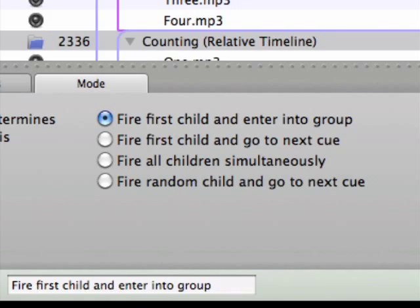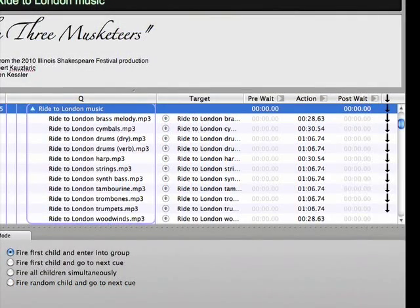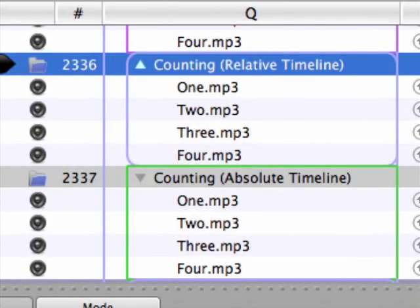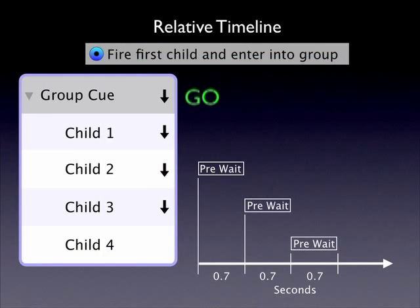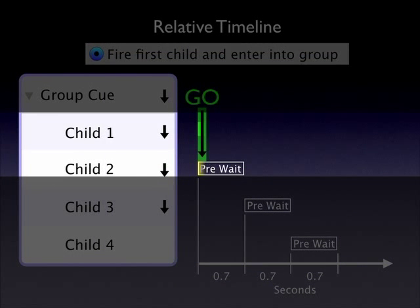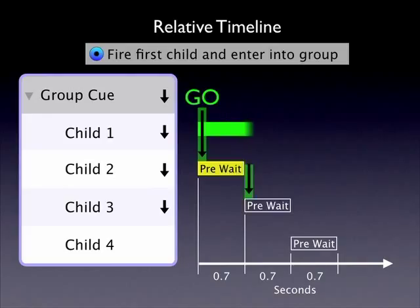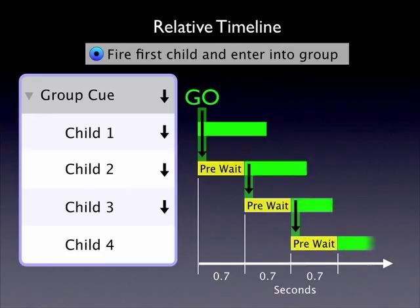I typically use the first group mode in combination with auto-continues to fire all children cues with one go. While this might seem the same as Fire All Children Simultaneously, there's an important difference that leads us into a discussion of absolute versus relative timelines. Cue 2336 provides an example of a relative timeline: the first child fires, auto-continues to the next, and the second child begins its pre-wait countdown immediately. When the pre-wait is complete, the second child fires, triggering the next child's pre-wait — like dominoes falling one after another. As soon as 0.7-second pre-waits are added, the firing of each cue is directly related to when the previous cue fired.